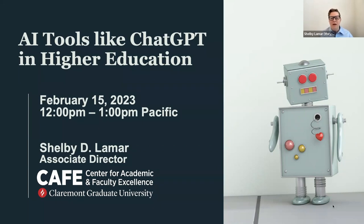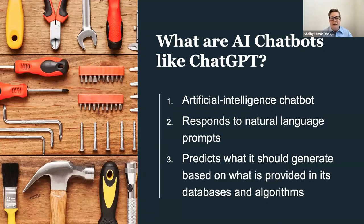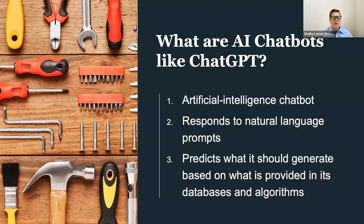So first off, I just want to start very briefly with what are AI chatbots like ChatGPT. Very briefly, it's an artificial intelligence chatbot. You might have seen other similar things — for instance, if you're talking to your phone provider and they have a chat with a representative option, that can oftentimes be a type of artificial intelligence chatbot. What they are designed to do is respond to natural language prompts from the user, and it generates text based on its algorithms and the databases that it has been trained on.